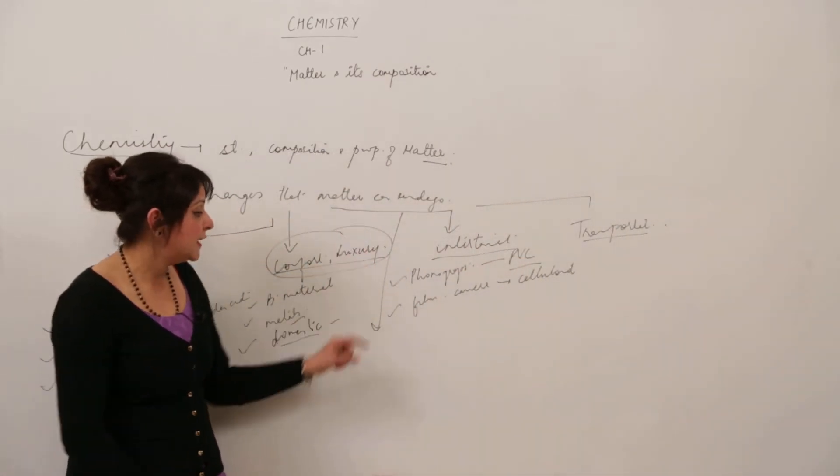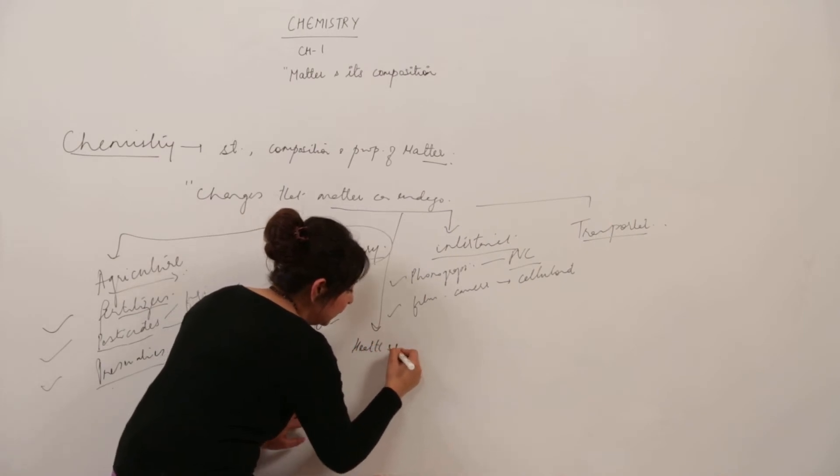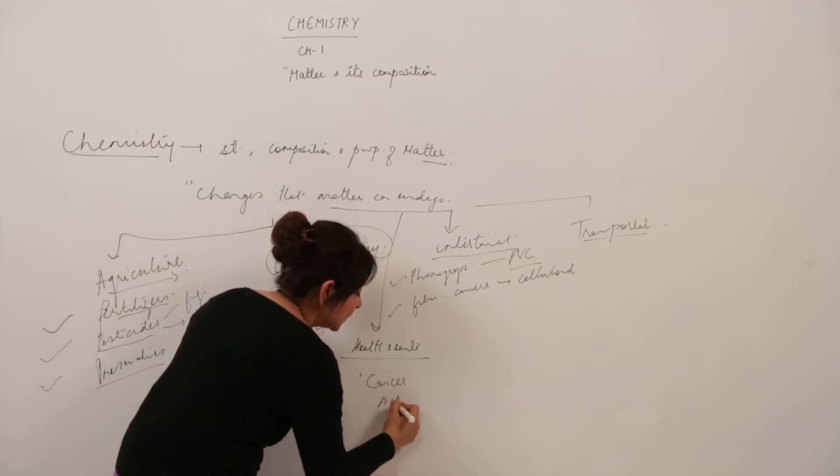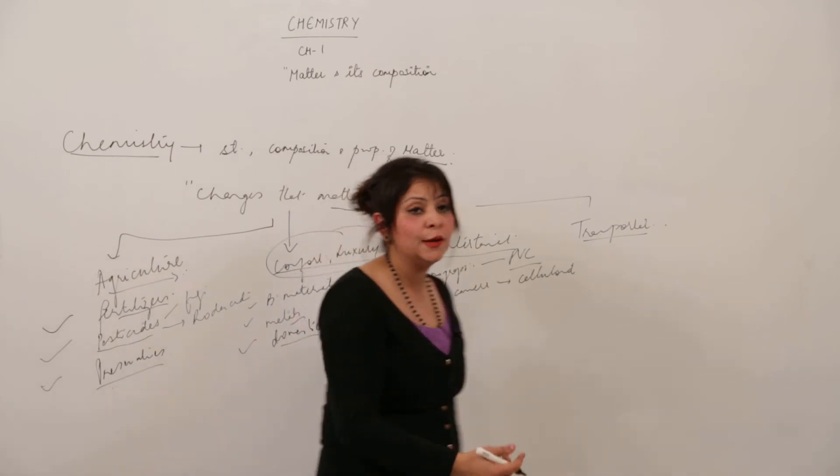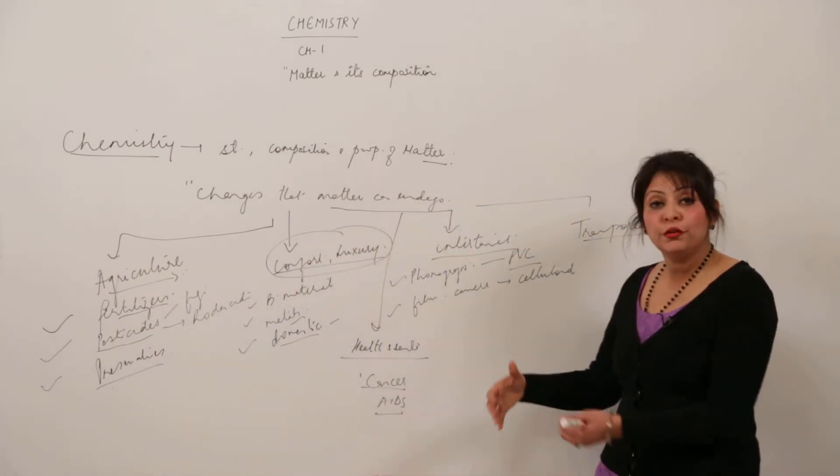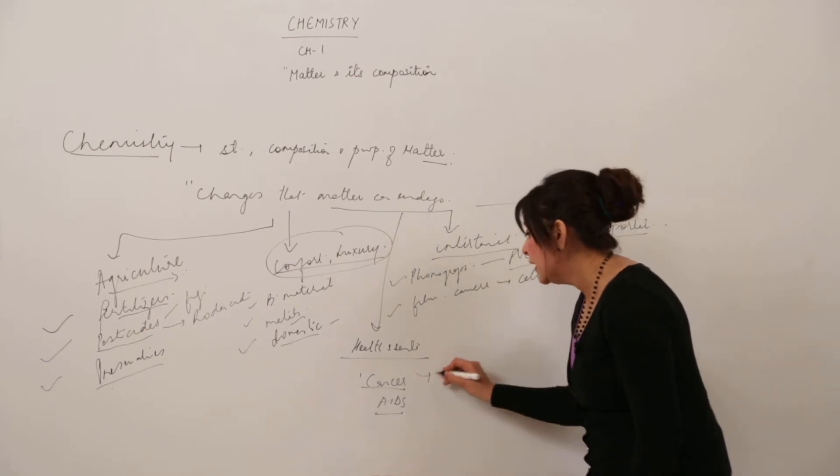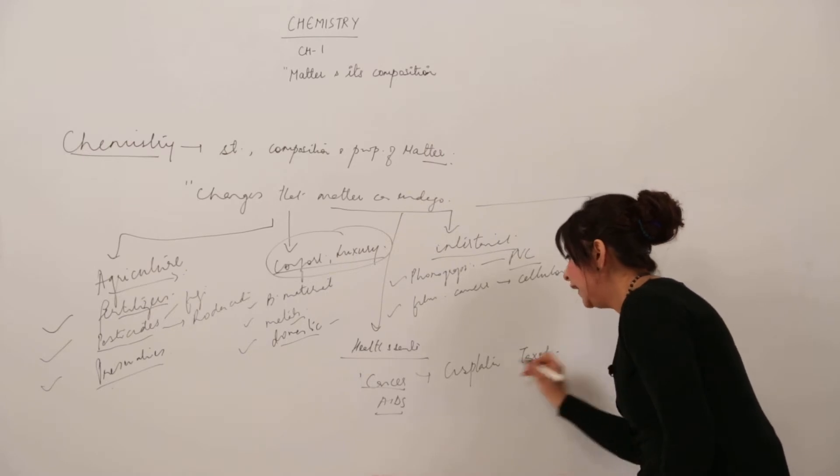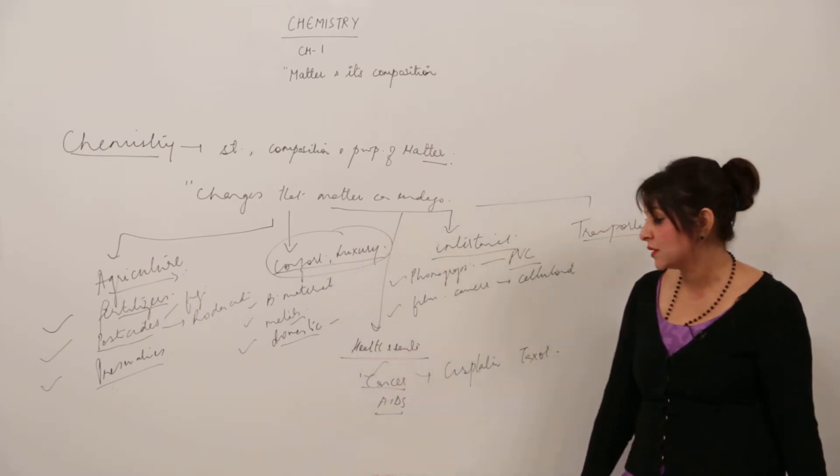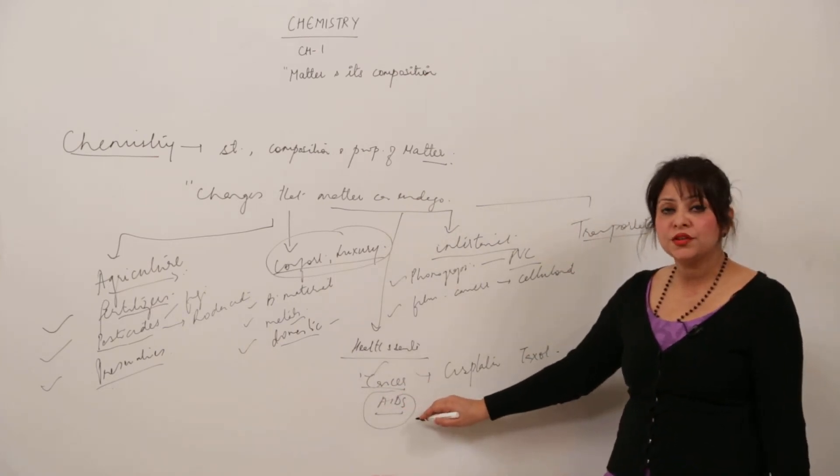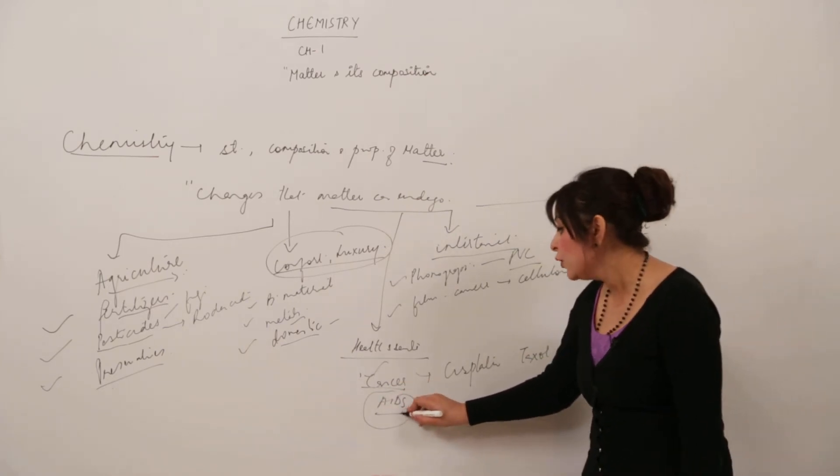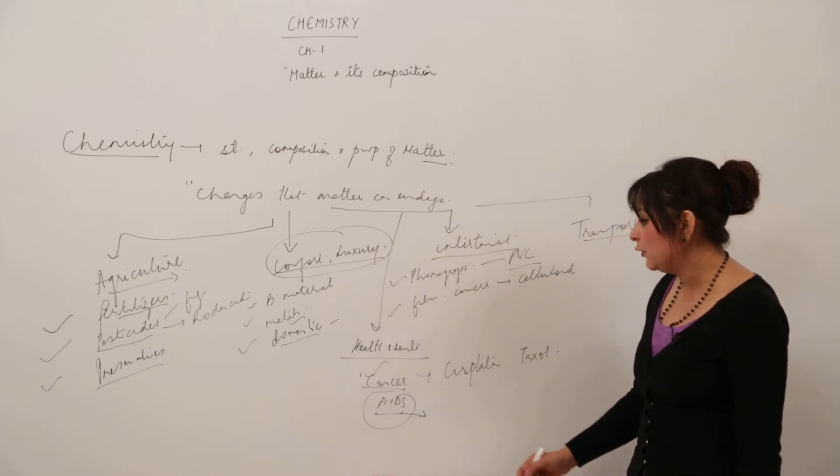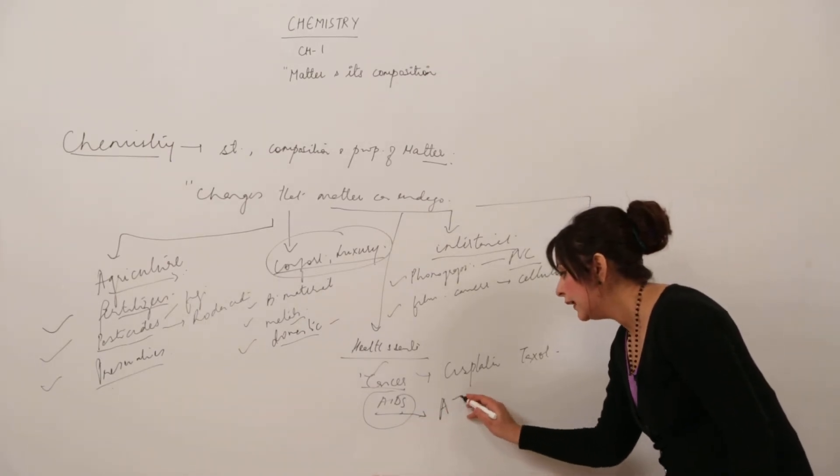It plays an important role in health and sanitation as well. You know there are so many incurable diseases, out of which cancer and AIDS are incurable. With the passage of time, with the development in chemistry, we have the cure for cancer and AIDS as well. For cancer treatment there are drugs like cisplatin and taxol which have made cancer curable and saved many lives. And AIDS, which is acquired immunodeficiency syndrome, was again incurable, but now with the development of chemistry and science technology, we have the life-saving drug for AIDS as well—that is AZT, azidothymidine.